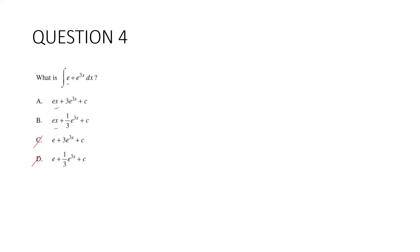Now we need to integrate this. The integral of e to the 3x is e to the 3x divided by the derivative of the second function, which is 3. And we need to add our constant and add on our ex. And our answer is b.